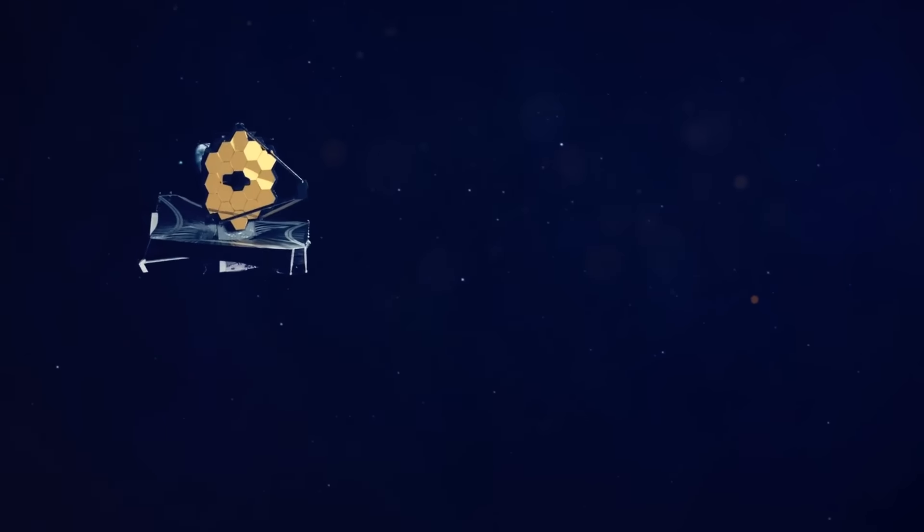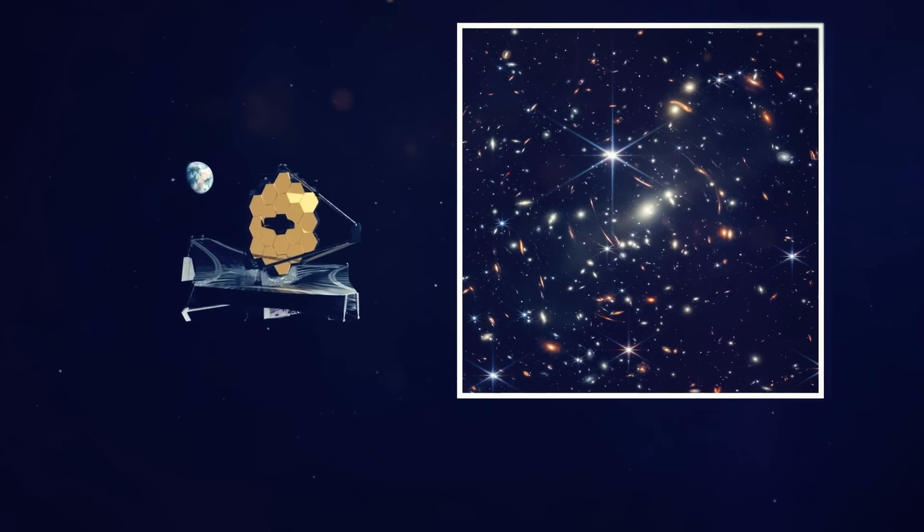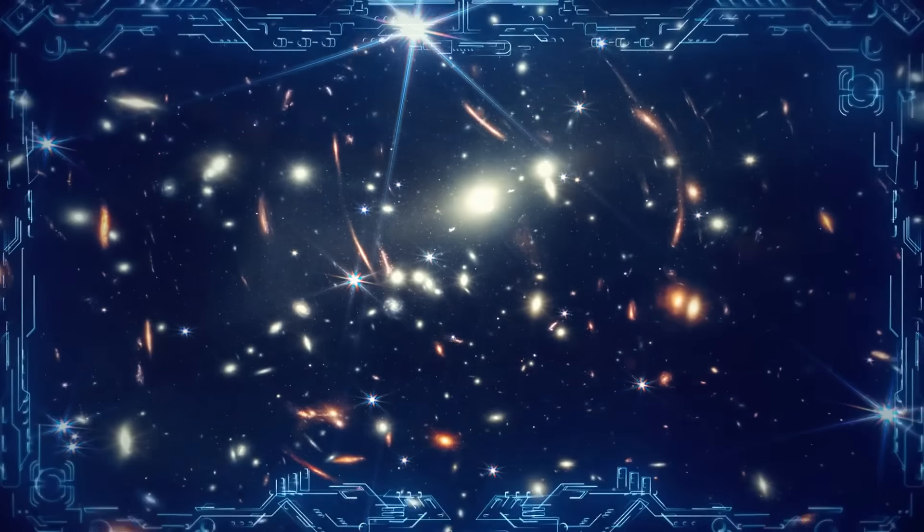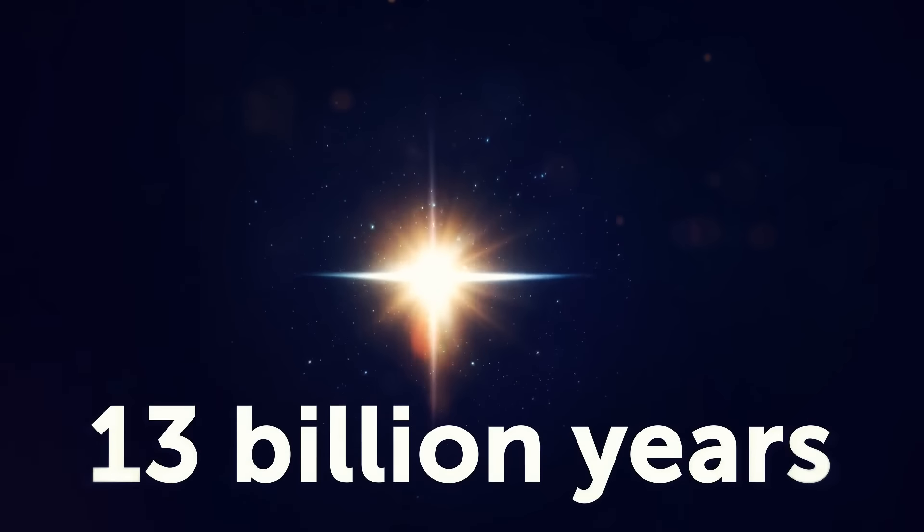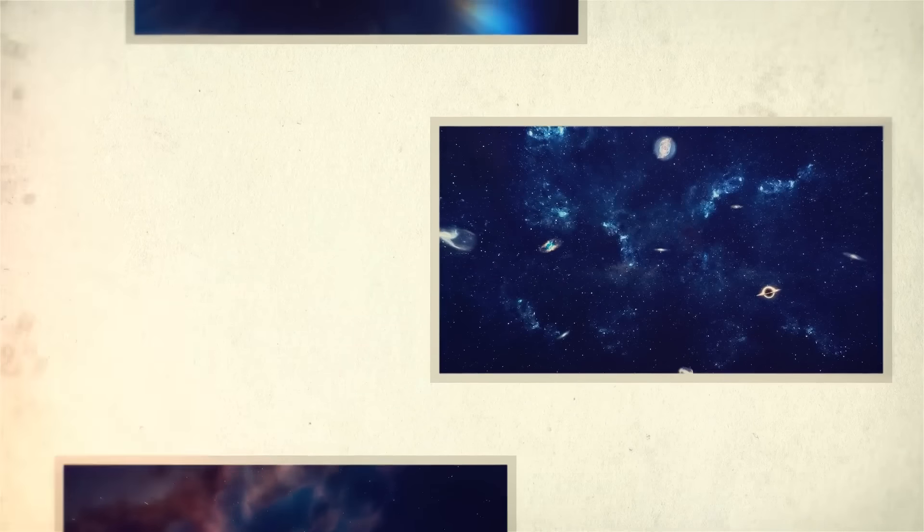Recently, we unveiled the first color image from the James Webb Space Telescope. It's a mind-bending photo capturing thousands of ancient galaxies. This oldest documented light in the history of the universe dates back over 13 billion years. That's just 600 million years after the Big Bang. It's like getting a sneak peek into the universe's baby album.